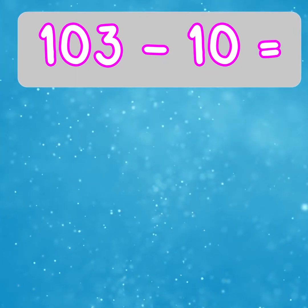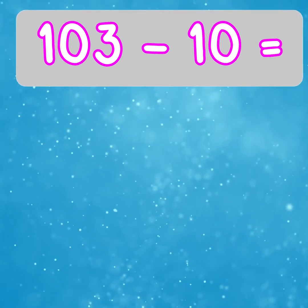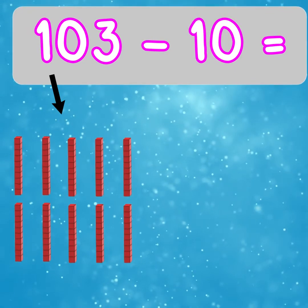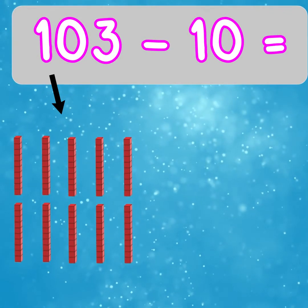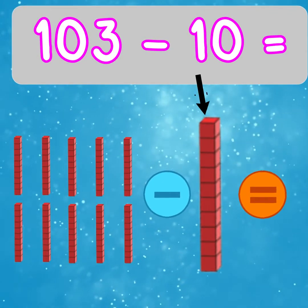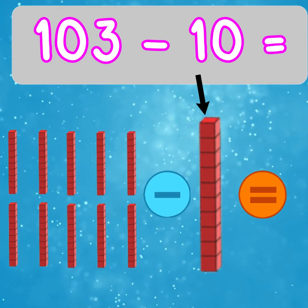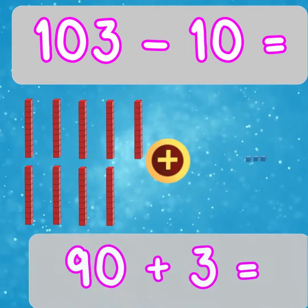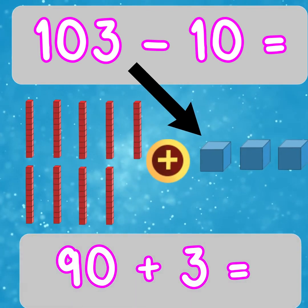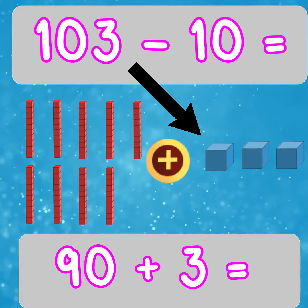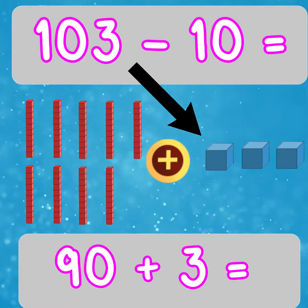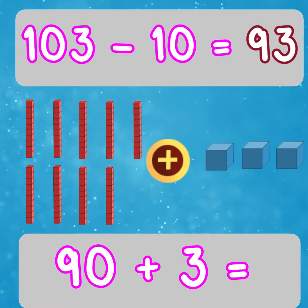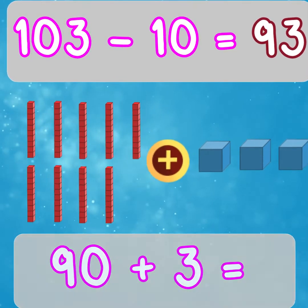Let's find 10 less using base 10 equipment. What is 10 less than 103? First, we know 100 is the same as 10 tens. 10 tens subtract 1 ten would leave 9 tens, which is the same as 90. Then we just add back on the 3 ones, which equals 93. So 103 take away 10 equals 93.